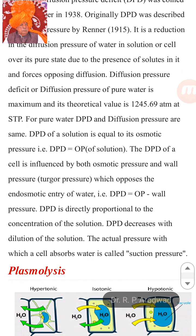Wall pressure opposes the endosmotic entry of water, so DPD = Osmotic Pressure − Wall Pressure. DPD is directly proportional to the concentration of the solution, and DPD decreases with dilution of the solution. The actual pressure with which a cell absorbs water is called suction pressure.